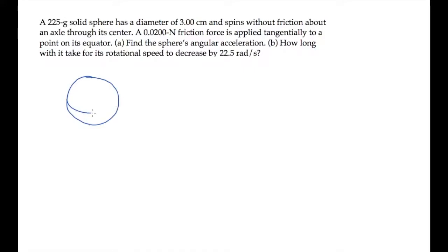The solid sphere in this problem spins without friction about an axle through its center. The sphere has a radius r and a mass m. I'll draw it spinning this way so that its initial angular velocity, omega-0, is directed up. That's the direction we'll call positive through the rest of this problem.